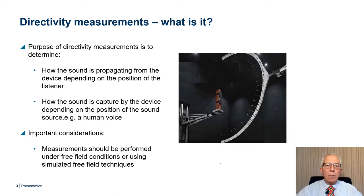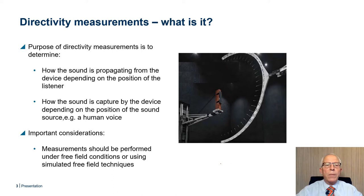Directivity measurement — what is it all about? The purpose of a directivity measurement is to determine how sound is propagating from a device depending on the position of the listener. Alternatively, it could be to determine how sound is captured by the device depending on the position of a sound source, for instance a human voice. When performing directivity measurements, it is important to consider that they should be performed under free-field conditions, or using simulated free-field techniques, to eliminate reflections from surrounding walls, the ceiling, or the floor.